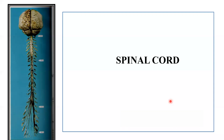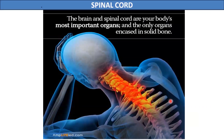In this lecture, we will study about the spinal cord, a part of the central nervous system. The brain and the spinal cord are the two parts of the central nervous system and are the only organs in the body which are enclosed in bones. The brain is enclosed in the skull while the spinal cord is enclosed in the vertebral column.